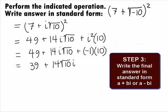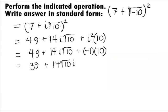In Step 3, we want to make sure our final answer is written in standard form. So, our final answer will be 39 plus 14 square root of 10i.